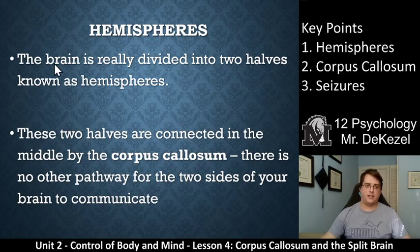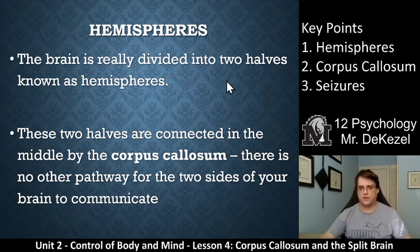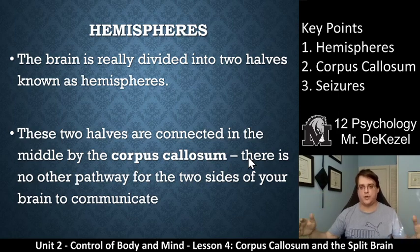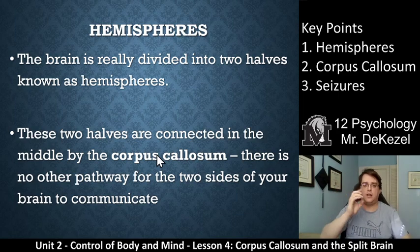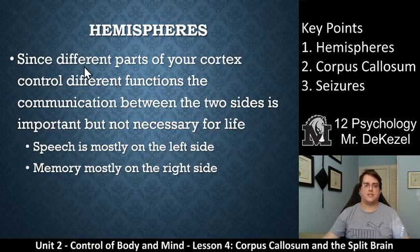Hemispheres — key point one. The brain is essentially divided into two halves, and they're known as hemispheres, even though your brain isn't quite a sphere. These two halves are connected in the middle by the corpus callosum, so there is no other pathway for the right side and the left side of your brain to interact with one another. It is an important part, but turns out not essential for life. The corpus callosum is right in the middle — it's kind of sunk down in the middle of your brain — and it is a bundle of nerves that go back and forth and send information to each half. Since different parts of your cortex control different functions, the communication between the two sides is important, but not necessary.